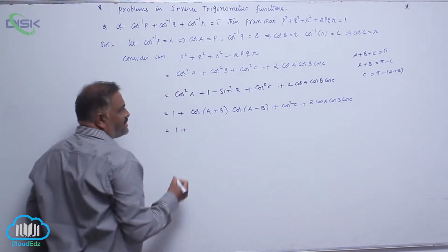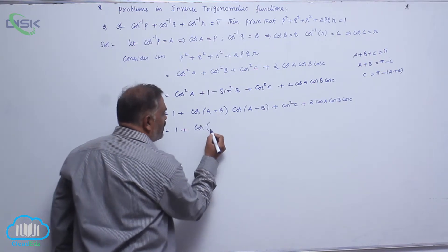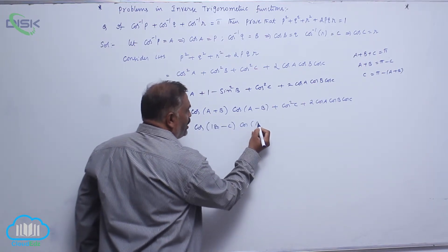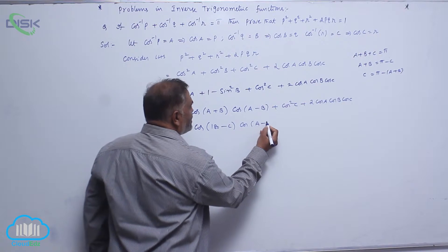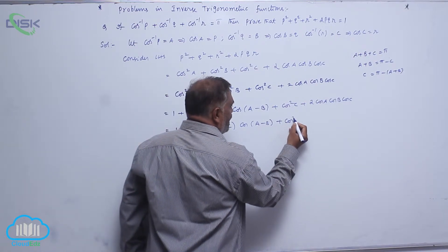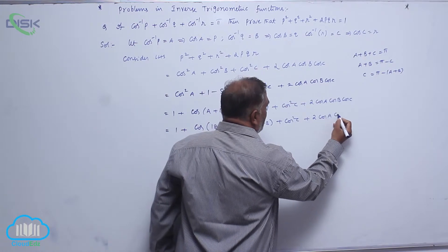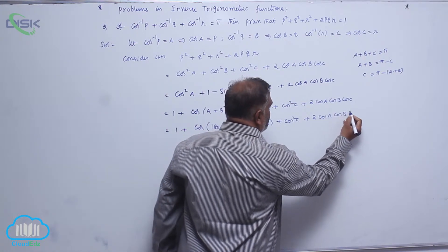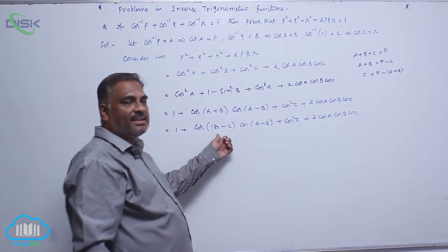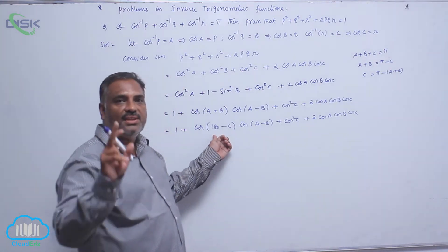We can write cos of (A plus B) as cos of (180 minus C), multiplied by cos of (A minus B), plus cos squared C. Since 180 minus C belongs to the second quadrant, cosine is always negative there.